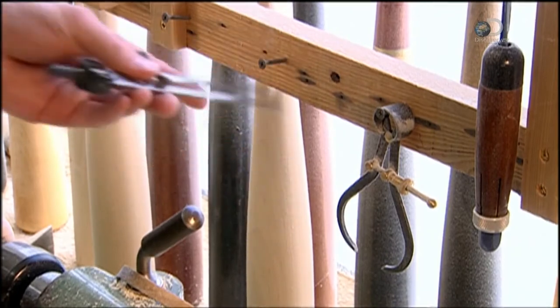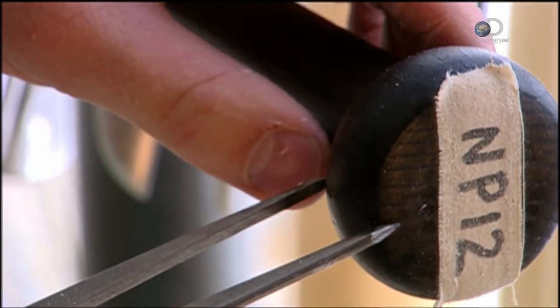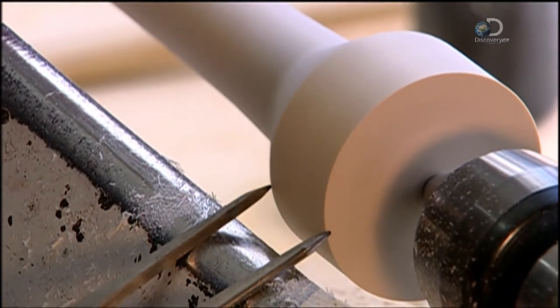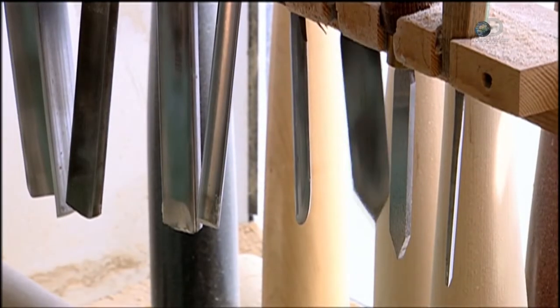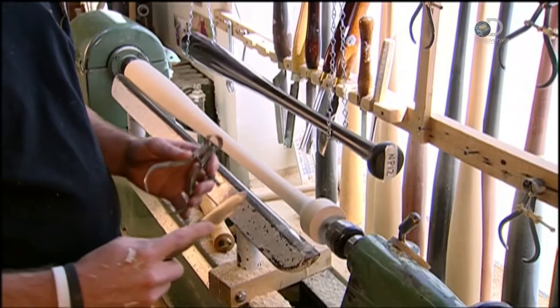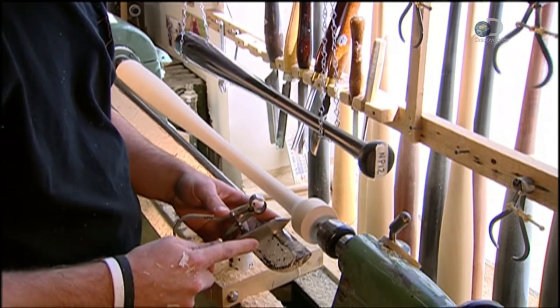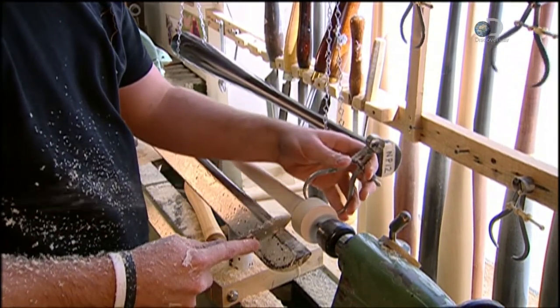With another caliper, the thickness of a finished bat is checked and compared to the one just carved. A turning tool called a skew chisel is used to narrow the shoulder of the bat. Measurements are checked as the cutting takes place.